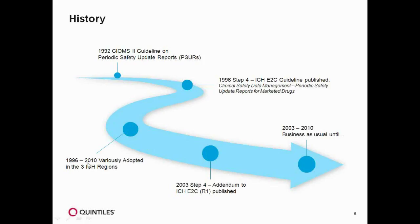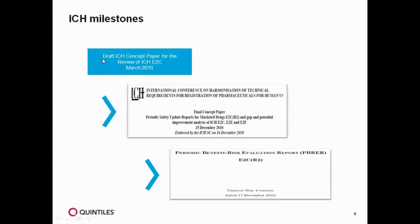Through to 2010, various regions adopted the ICH guidelines. Through to 2003, there was a Step 4 published, which was the Addendum to the ICH E2C R1. From 2003 to 2010 it was business as usual. The draft ICH concept paper for the review of ICH E2C started in March 2010. The ICH final concept paper was established December 15, 2010, followed by E2C R2 — the PBER — Step 4 version, dated December 12, 2012.